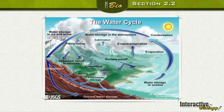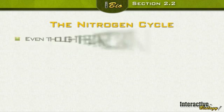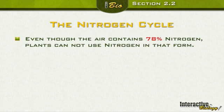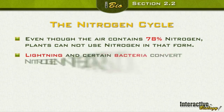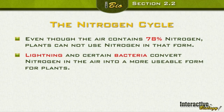Now let's talk about the nitrogen cycle. Even though the air contains 78% nitrogen, it's in a form that plants can't use directly. So the nitrogen in the air needs to be converted. Two things can convert it: lightning and bacteria. Those can convert the nitrogen in the air into a form that's more usable by plants.